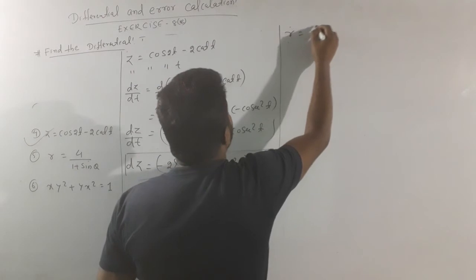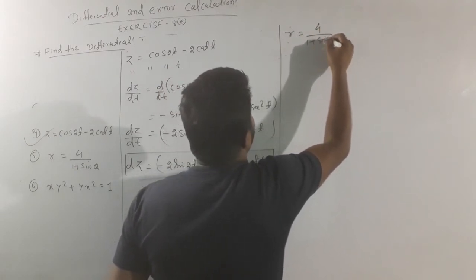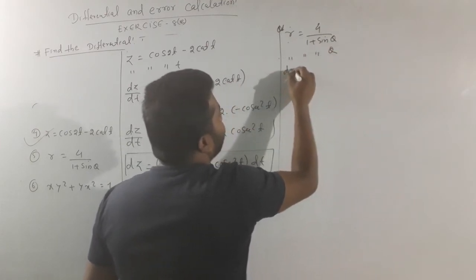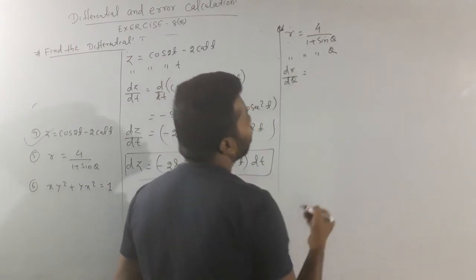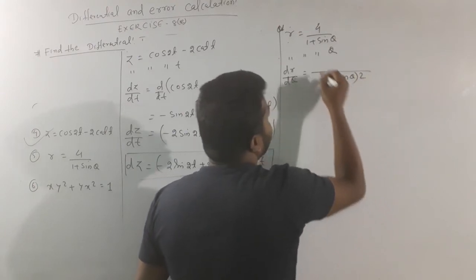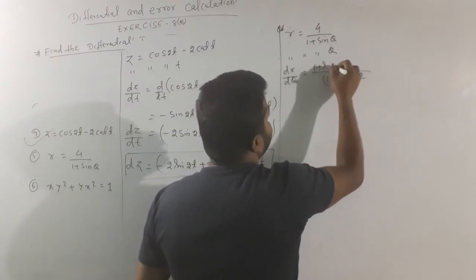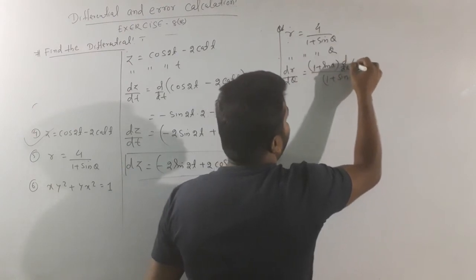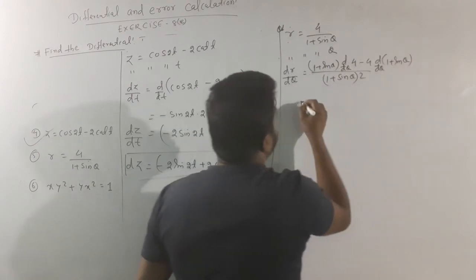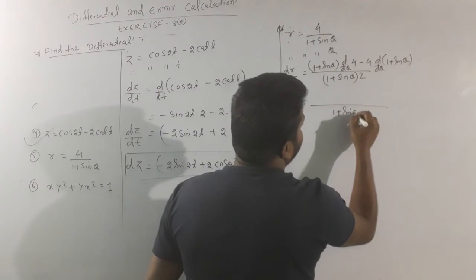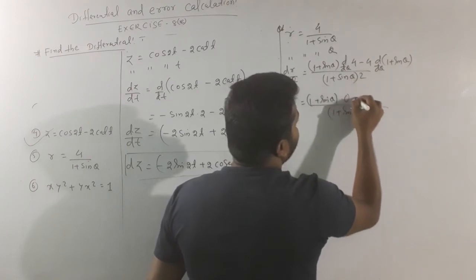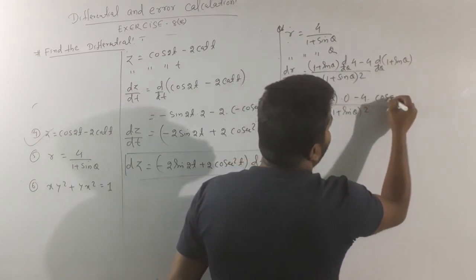Number 5: r equals 4 divided by (1 + sin θ). Differentiate both sides with respect to θ using the quotient formula. dr by dθ equals [(1 + sin θ)(0) − 4(cos θ)] divided by (1 + sin θ) squared, which gives dr by dθ equals −4 cos θ divided by (1 + sin θ) squared.